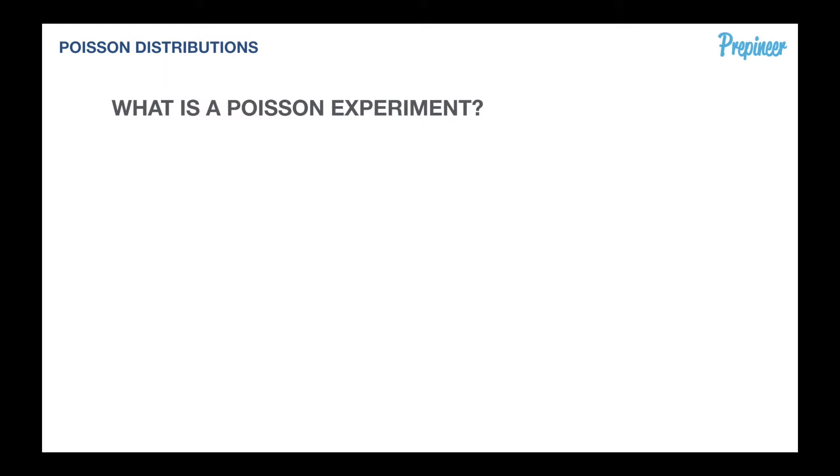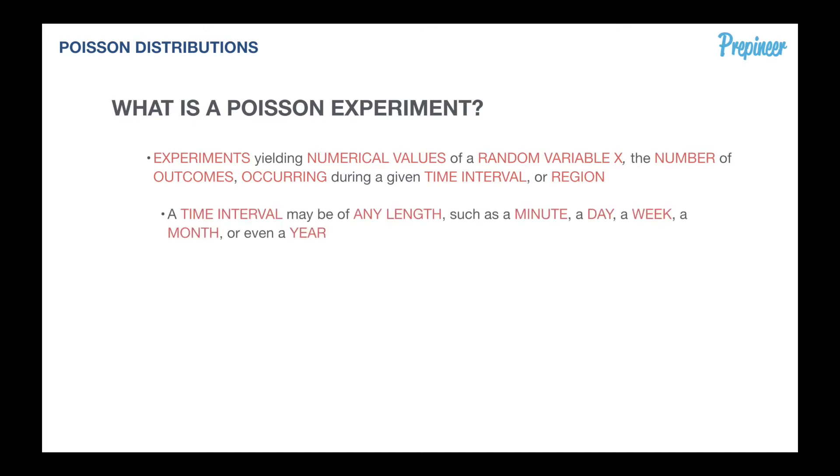Let's talk about what a Poisson experiment is. Poisson experiments are experiments yielding numerical values of a random variable X, which is the number of outcomes or events occurring during a given time interval or within a region. A time interval may be any length, such as a minute, a day, a week, a year, a month, or a second.